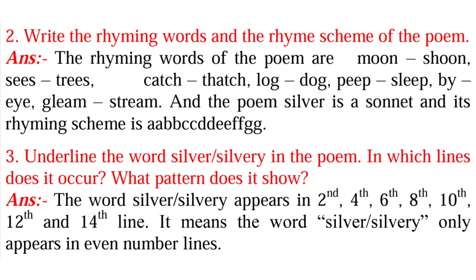The poem Silver is a sonnet, and its rhyming scheme is: AA, BB, CC, DD, EE, FF, GG.